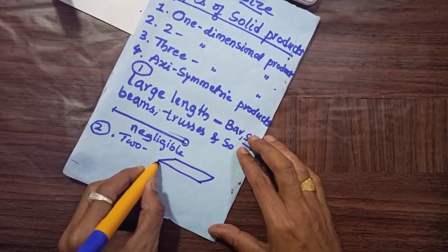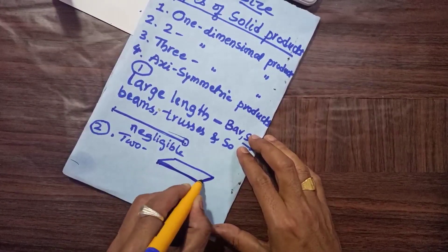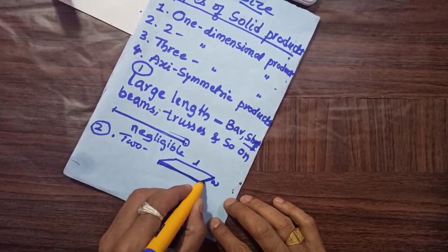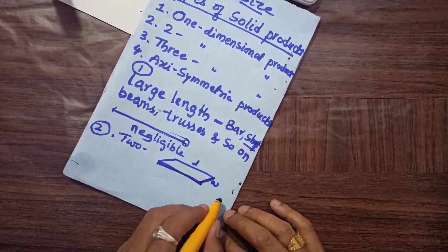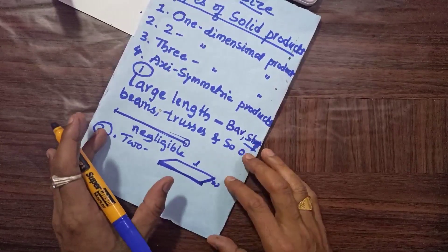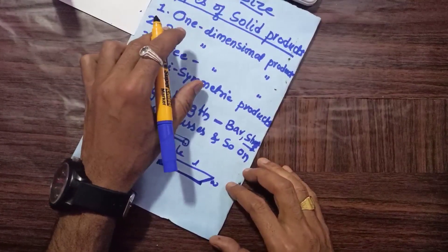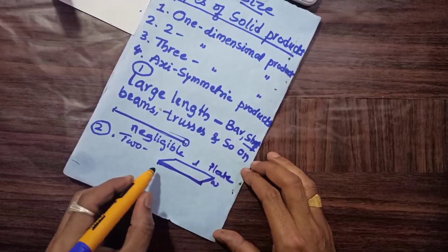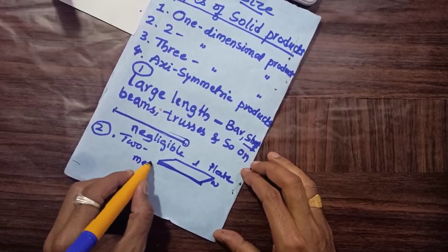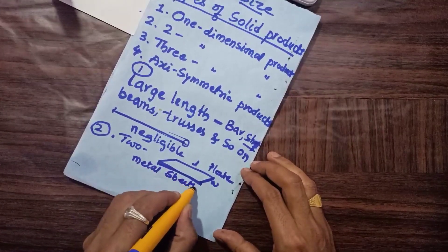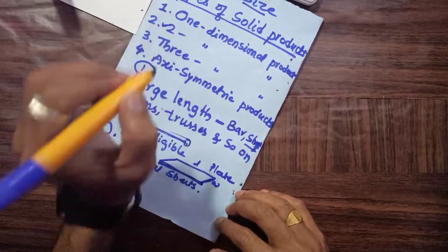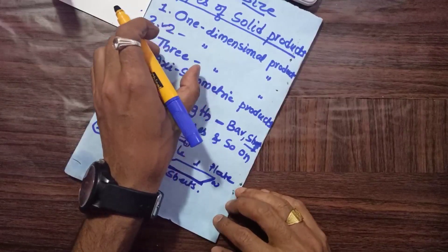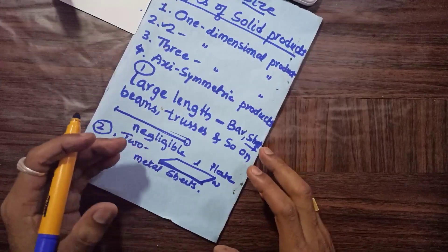In two-dimensional products, the length and width are considered while the third dimension, the height or thickness of the plate, is negligible. Such products are called two-dimensional products. Examples are plates and metal sheets, which are the best examples of two-dimensional products.